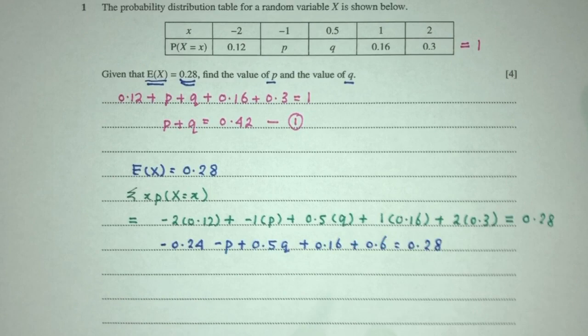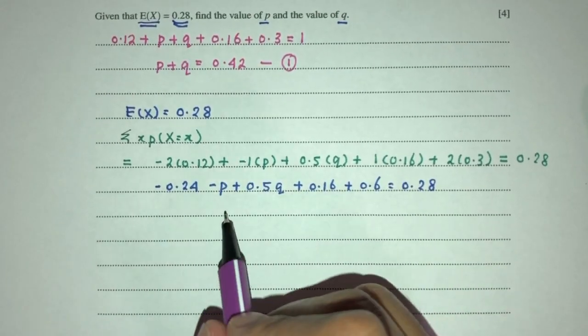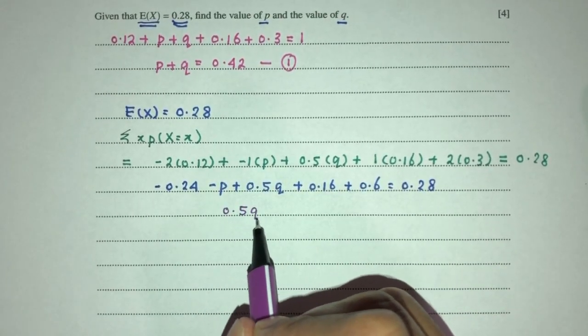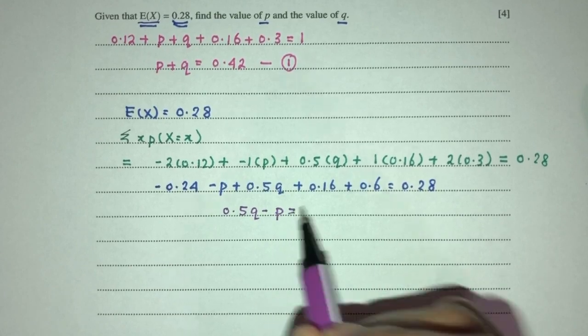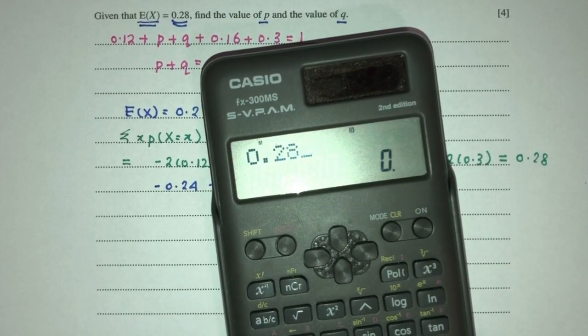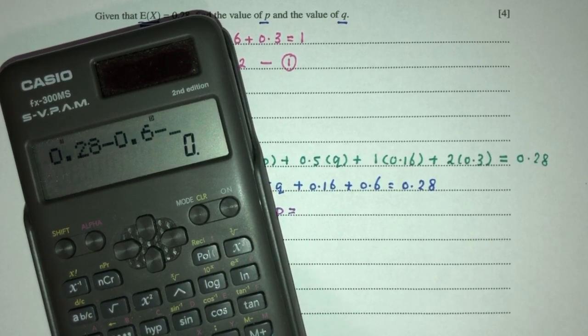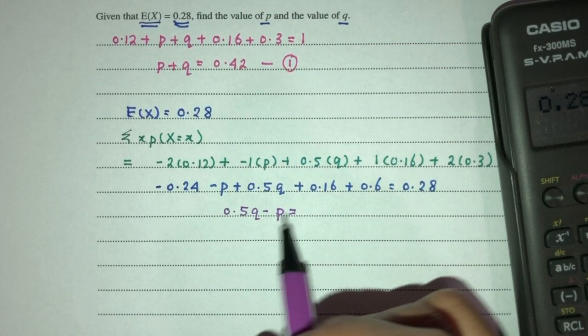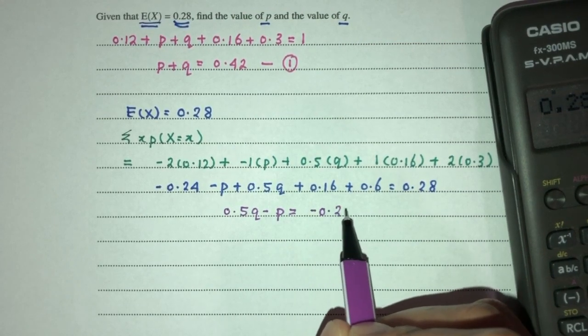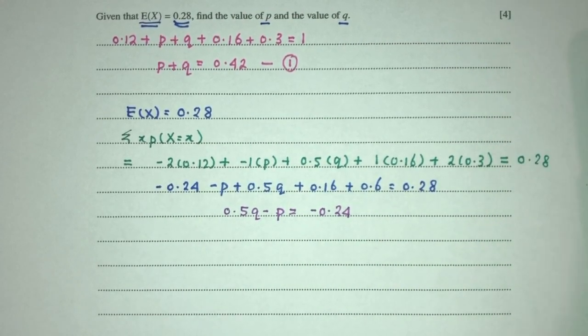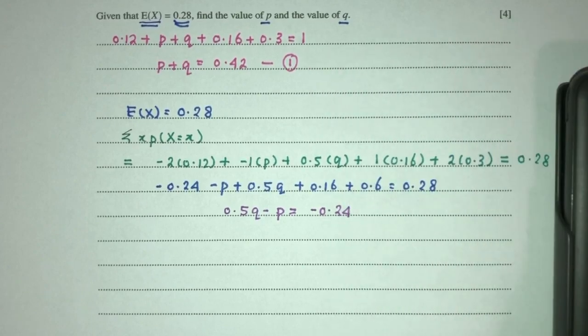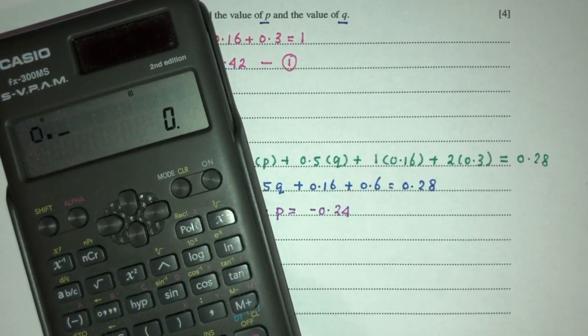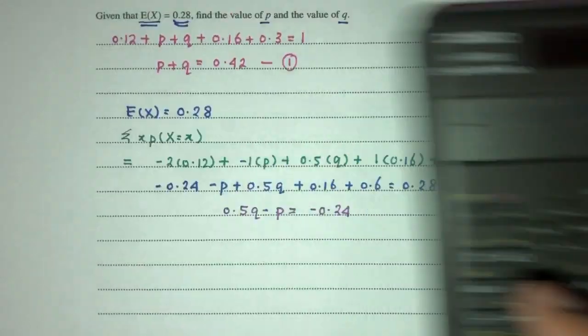So, here you have minus 0.24 minus P plus 0.5Q plus 0.16 plus 0.6 is equal to 0.28. Let's try to rearrange. You will have 0.5Q minus P is equal to 0.28 minus 0.6 minus 0.16 and then plus 0.24. That will be minus 0.24 as your answer for this one over here. Let's try one more time. So, we have 0.28. Let me first add everything over here.